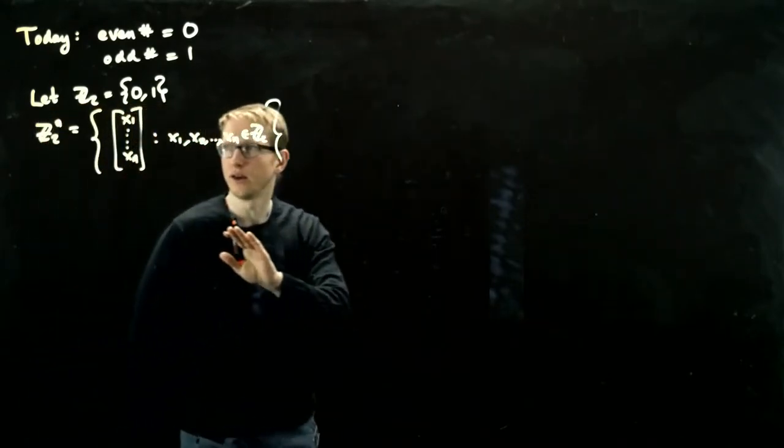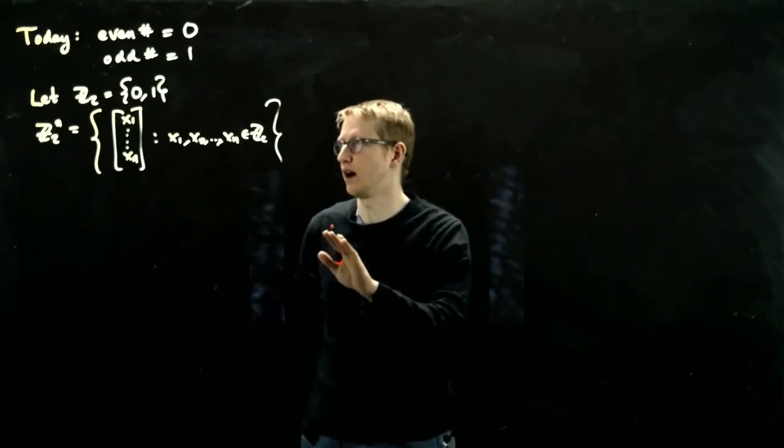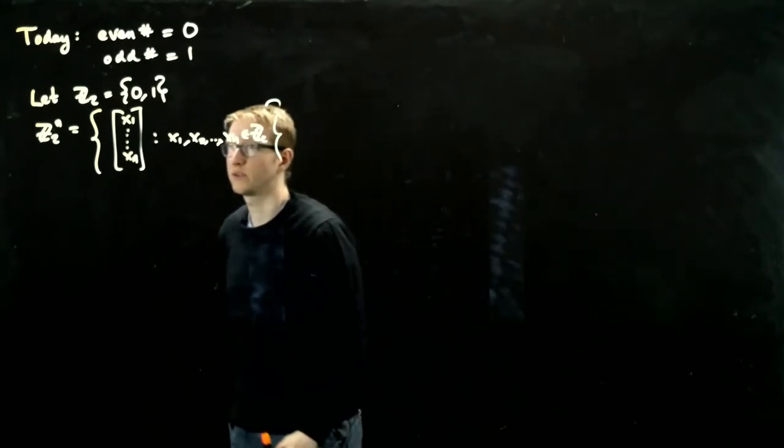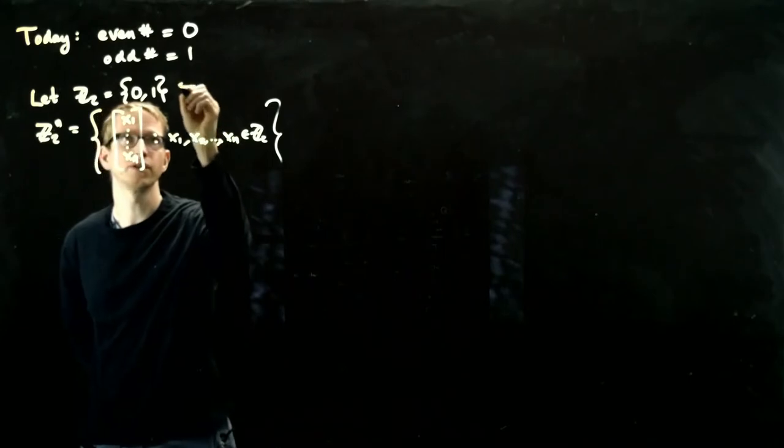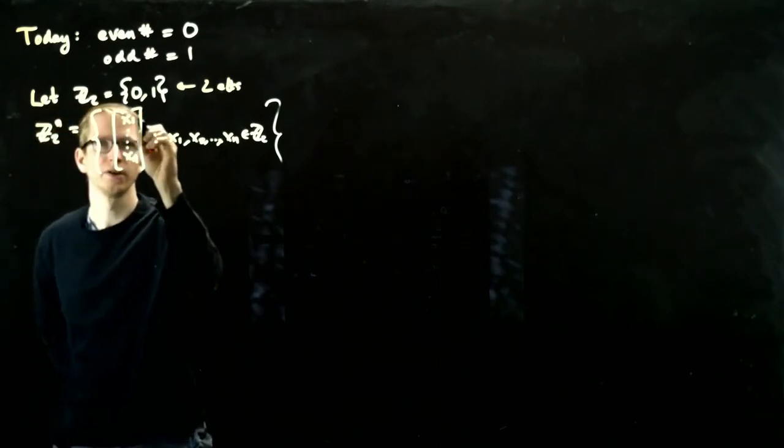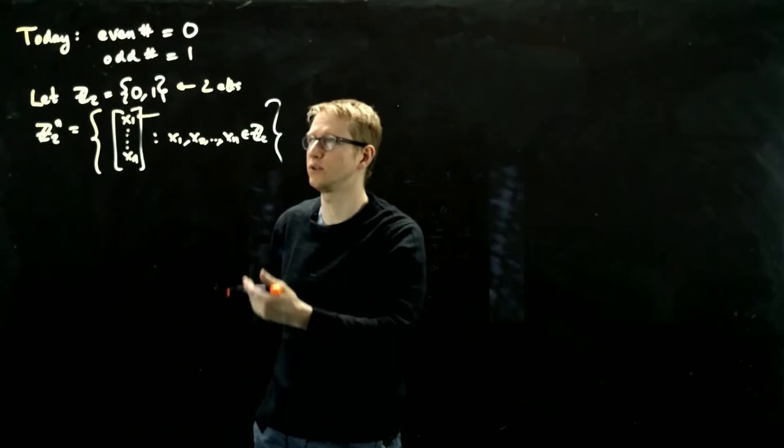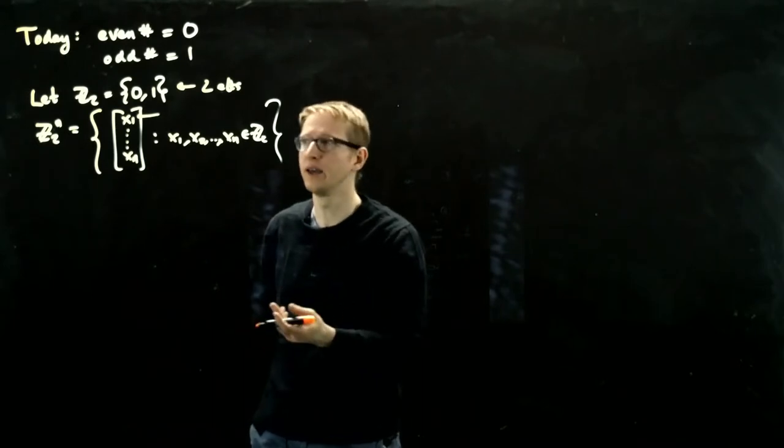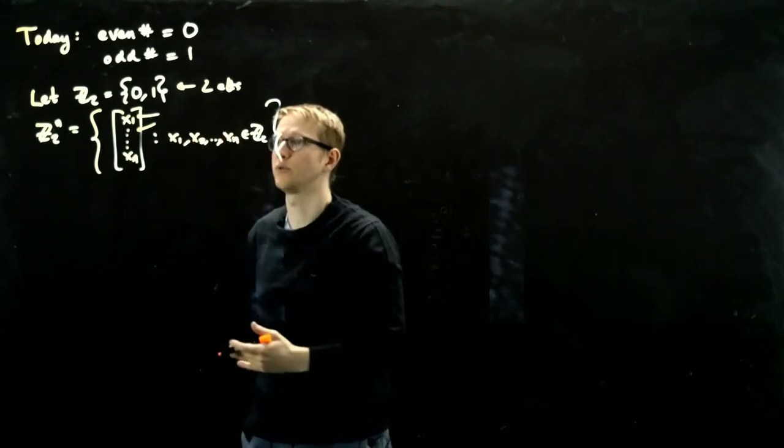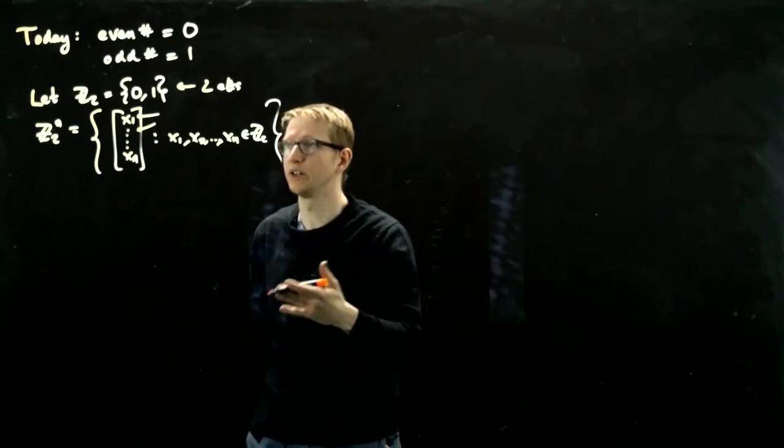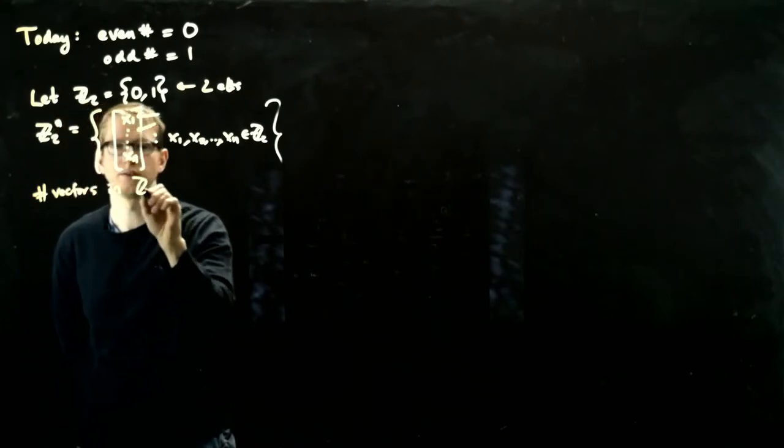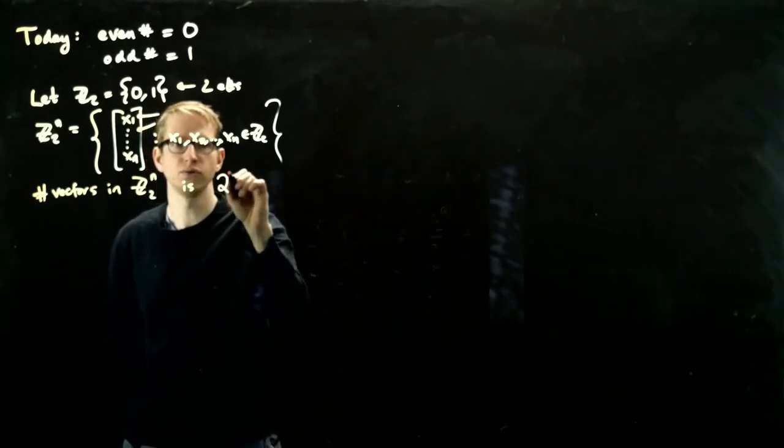The interesting thing about this vector space is that unlike the vector space R to the n, this has finitely many vectors. So how many vectors does this vector space have? Well, here there are two elements. And if you have n component vectors, you can either put a 0 or a 1 in each entry. Therefore each time you go through these entries, you have 2 to the n total possibilities. So the number of vectors in Z mod 2 to the n is 2 to the n.